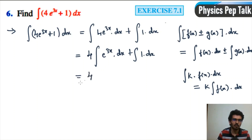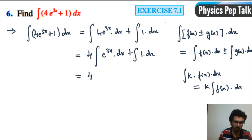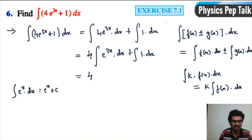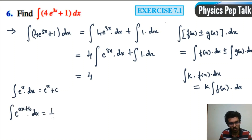This is the integral of e to the power of 3x. The solution method will use the formula: the integral of e to the power of x with respect to x equals e to the power of x plus c. More generally, the integral of e to the power of ax plus b with respect to x equals 1 over a times e to the power of ax plus b plus c.